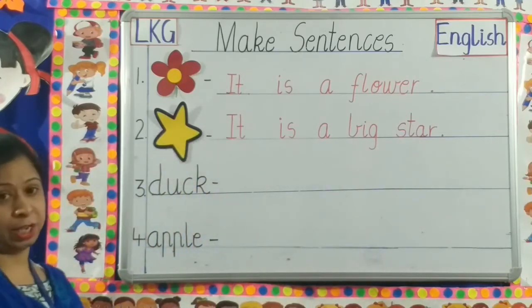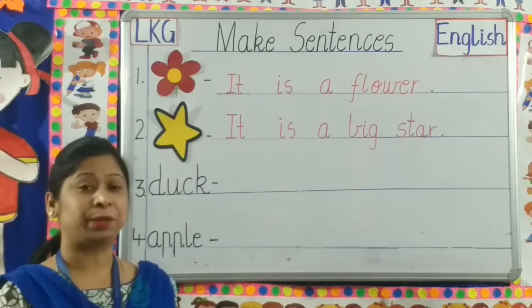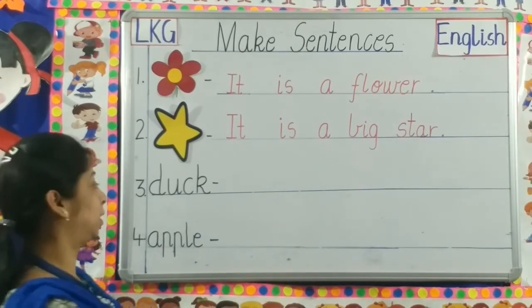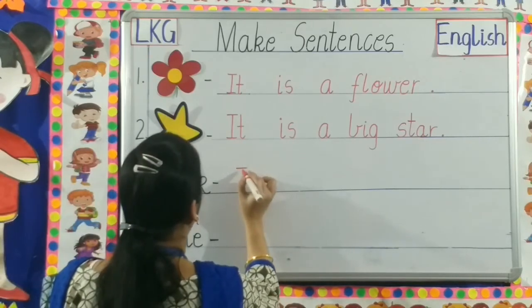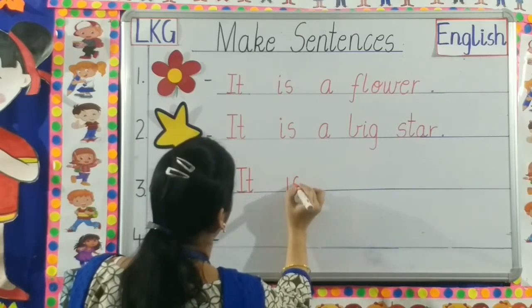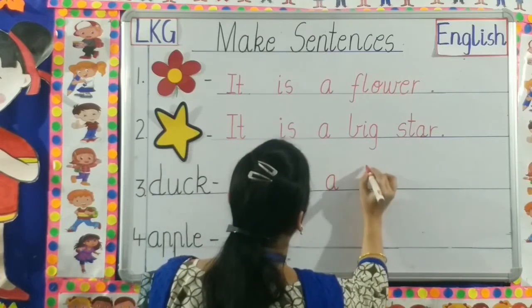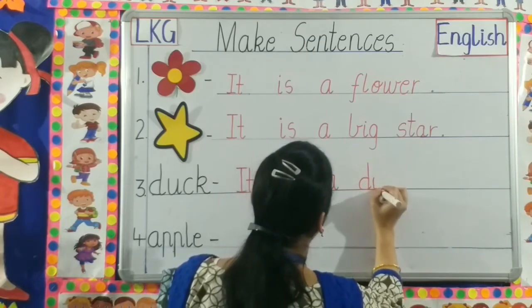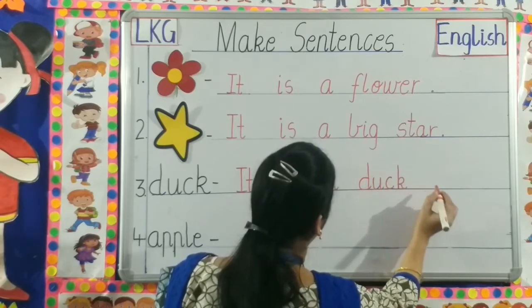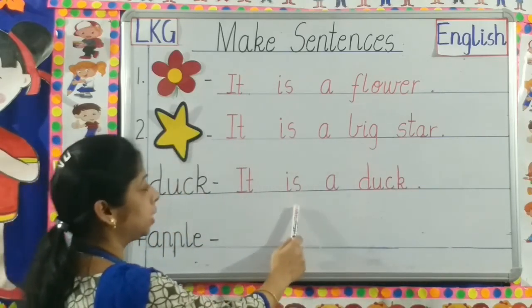Number three — duck. Can you make a sentence with the word duck? Yes, let us write the sentence. I-T, It. I-S, Is. A. D-U-C-K, Duck. Full stop. It is a duck.